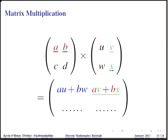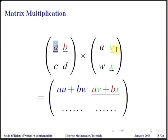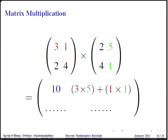The second element of the matrix is in the first row and second column of the resultant matrix. Again, the first pair of values is A and V — multiply them together. The second pair of values is B and X — multiply them together. Then add up all those products: AV plus BX. Using our values, that is three times five plus one times one, and that gives us 16.